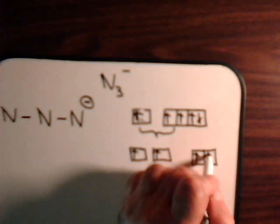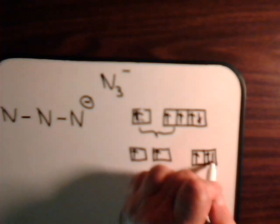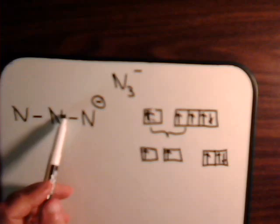Here are the SP orbitals that result, and there are two left-over unhybridized P orbitals, one already containing a pair of electrons. Remember, these SP orbitals are 180 degrees apart. So for the central nitrogen we have an SP orbital and an SP orbital, and then a lone pair of pi electrons and a single pi electron as well.